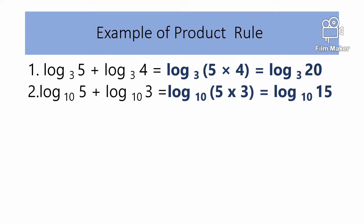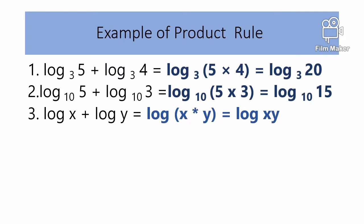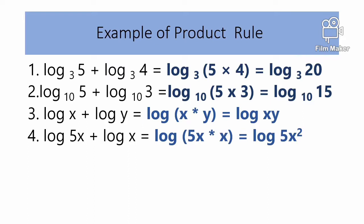Number 2: Logarithm base 10 of 5 plus logarithm base 10 of 3 equals logarithm base 10 of 5 times 3, which equals logarithm base 10 of 15. Number 3: Logarithm of x plus logarithm of y equals logarithm of x times y, and logarithm of x plus logarithm of x equals logarithm of x squared.